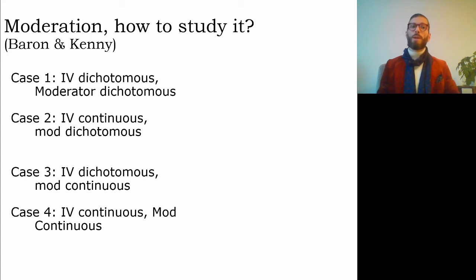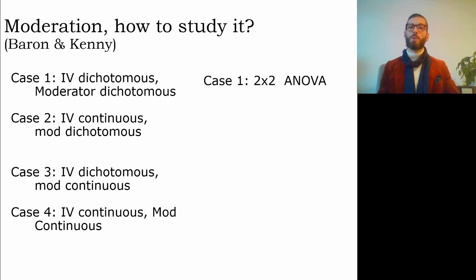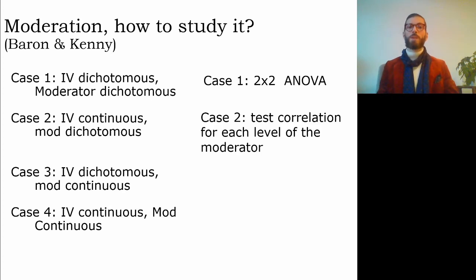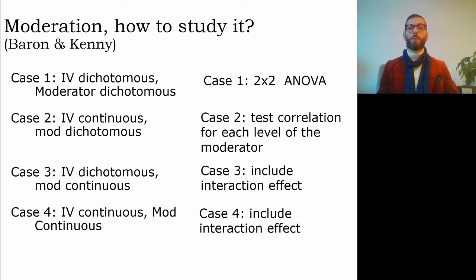So how do we study moderation? For the reading this week you were assigned the Baron and Kenny article, which describes four different cases and provides different ways of analyzing them. The first case is best analyzed using factorial ANOVA two-by-two. The second case by testing the correlation for each level of the moderator. The third and fourth cases by including an interaction effect in multiple regression.